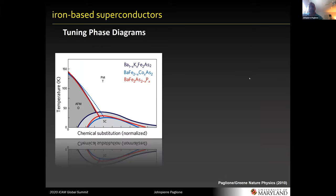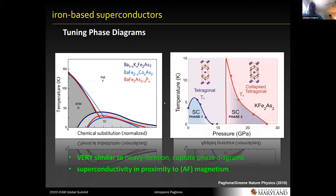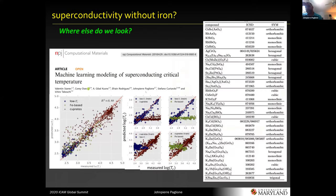The generic features of the iron superconductors — in particular the canonical phase diagram of magnetism and superconductivity — has driven much research. One nice example is where alkali metal substitution, transition metal substitution, and nictogen substitution all give you the same phase diagram. So we're doing something right — there's something universal here. The chemical toolbox you can use to tune things and look at the physics here is quite amazing.